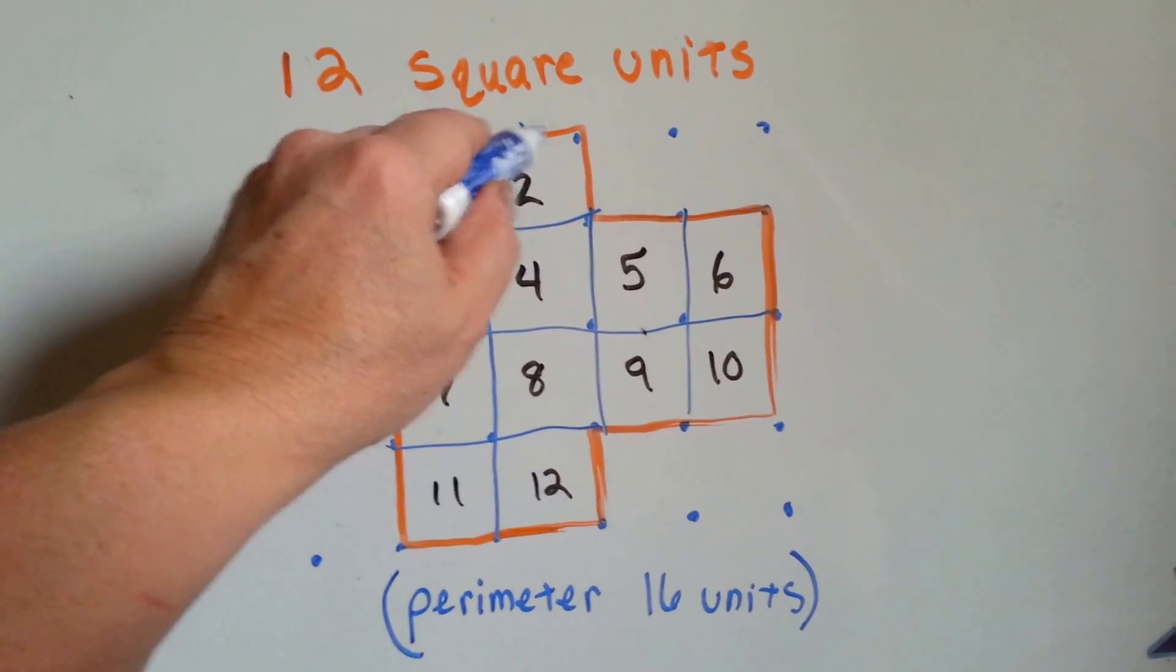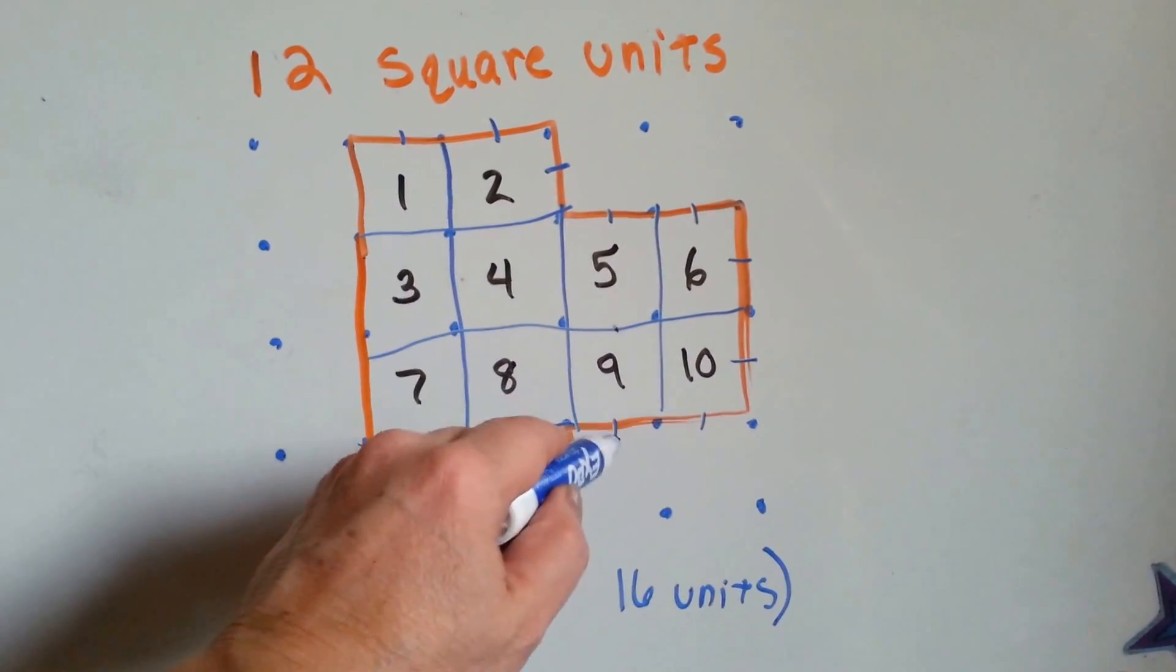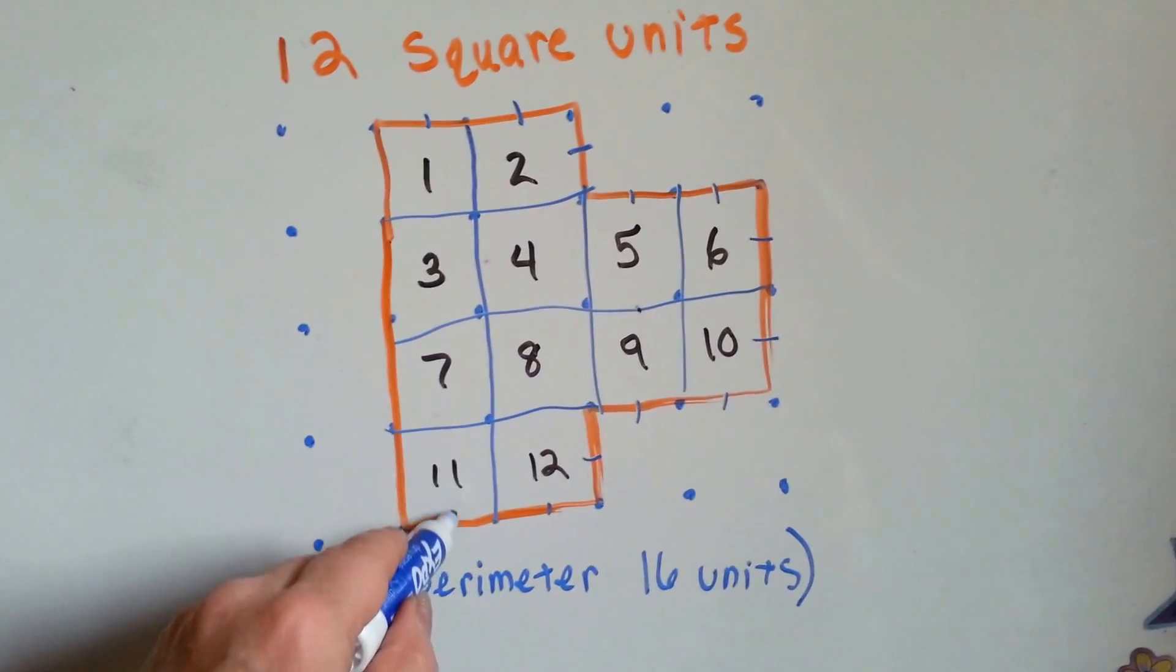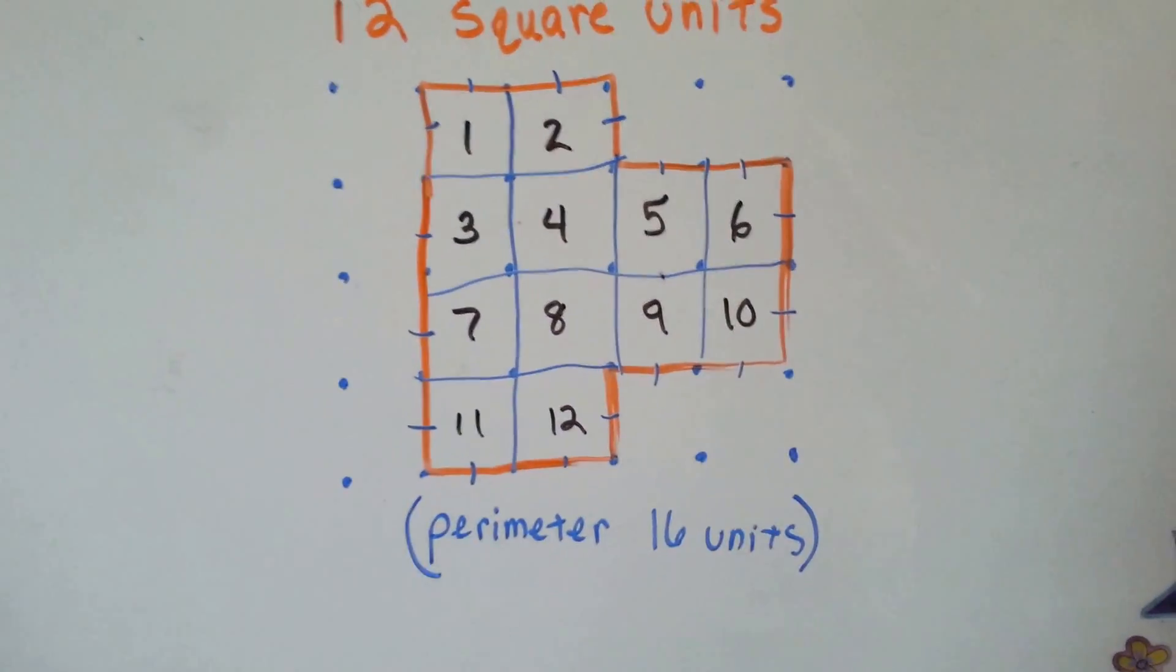We'll start at the top. One, two, three, four, five, six, seven, eight, nine, ten, eleven, twelve, thirteen, fourteen, fifteen, sixteen. Sixteen units.